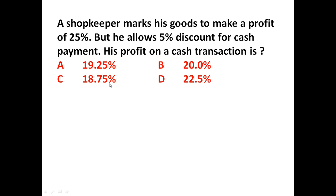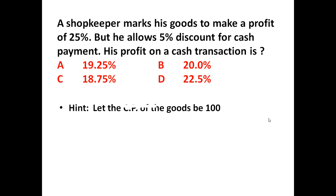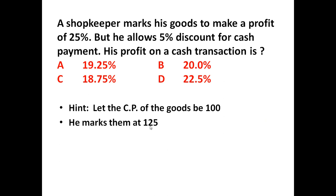The options are: 19.25%, 20%, 18.75%, or 22.5%. To answer this question, let us assume the cost price (CP) of the goods is rupees 100. He wants 25% profit, so he marks them at rupees 125.